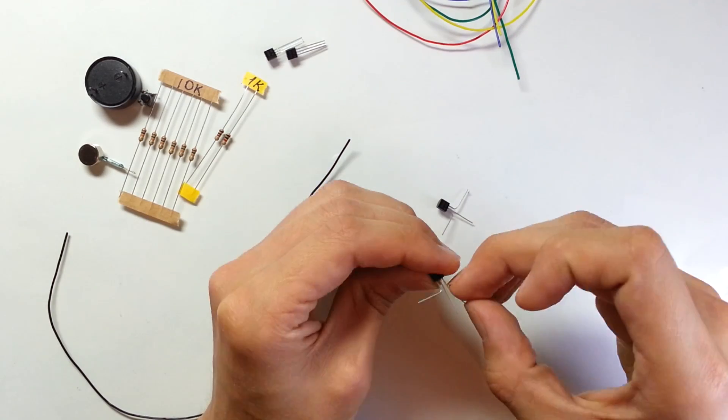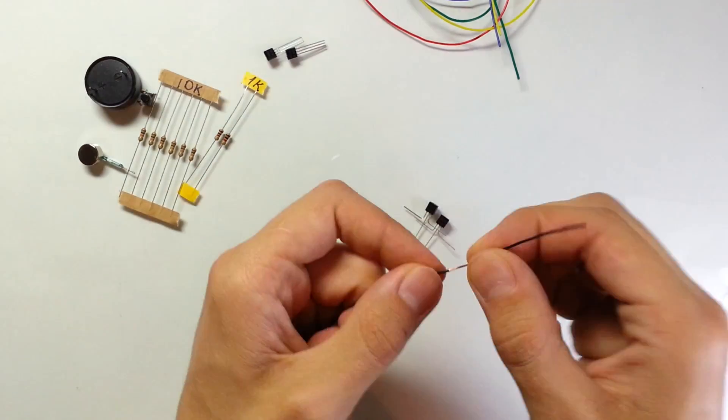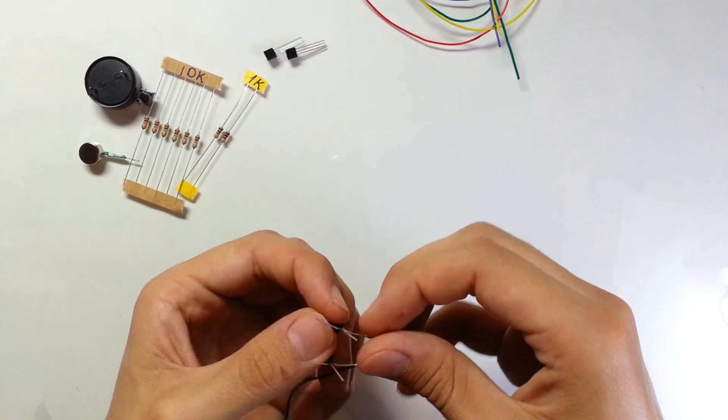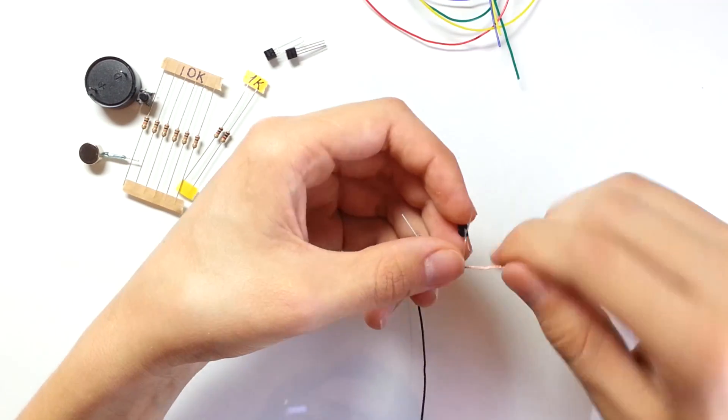I will not use any PCB board, so it will be easier for you to see how everything is connected. First I'm going to connect and solder a black wire to emitter leads of transistor Q2 and Q3.